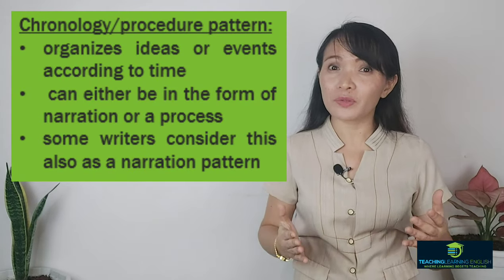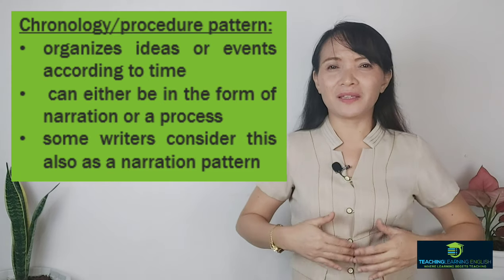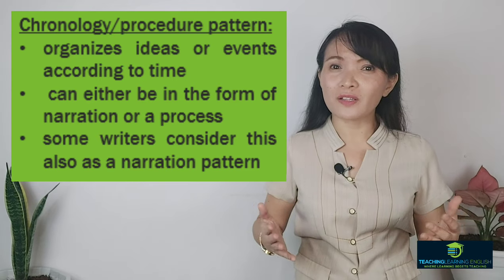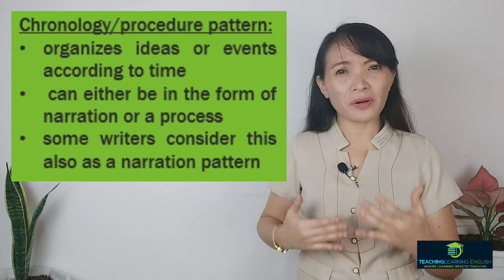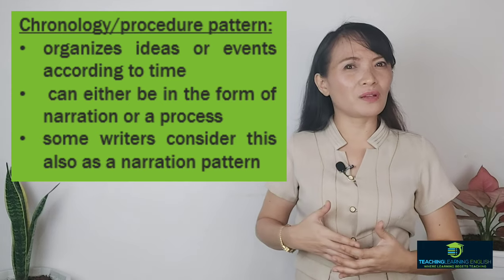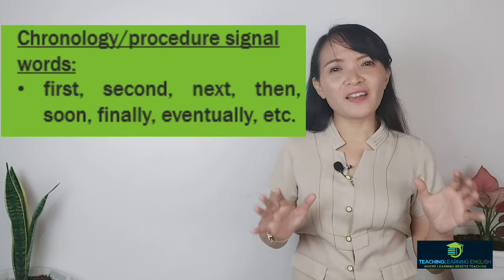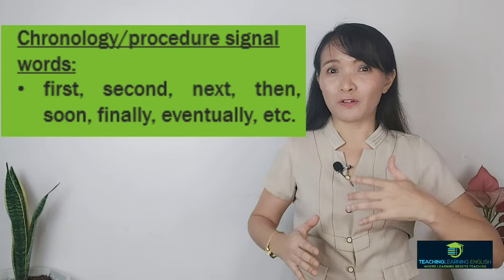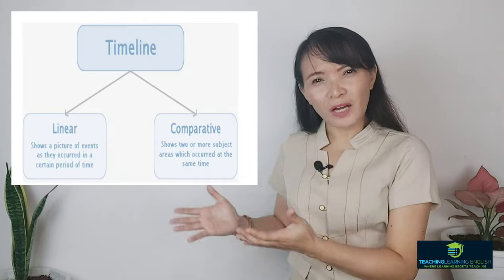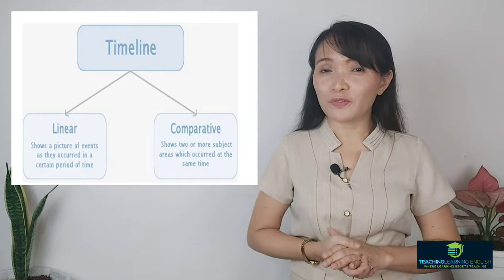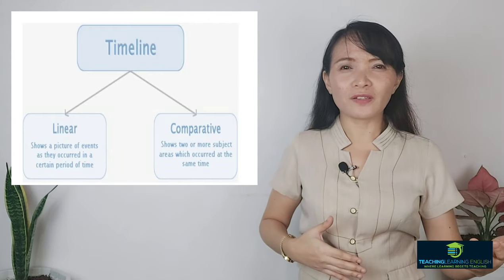Now let's proceed to the third pattern, which is chronology or procedure. As the name implies, this pattern organizes ideas or events according to time. It can either be in the form of narration or a process — that's why some writers also consider this a narration pattern. When you narrate, you try to tell a story, relating a series of events. Common signal words are: first, second, next, soon, finally, and more. This pattern is used when you cook, because you are doing a procedure. You can use a linear timeline or comparative timeline as your graphic organizer. One of the best topics for this pattern is biographies or process writing.